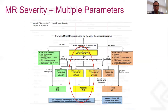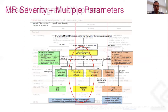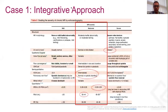Integrating all the parameters: the patient had a dilated LV, dilated LA, a vena contracta width of 0.4 cm, systolic blunting of pulmonary vein flow, an EROA of 0.3 cm², and a regurgitant volume of 34 cc's.